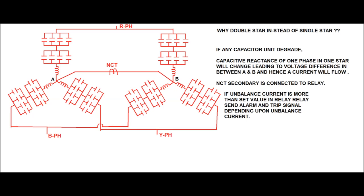Under healthy conditions, the star point voltage of each star connection is zero due to balanced current flowing in each star formation. If a capacitor unit in any phase degrades or fails, the capacitive reactance of that phase changes, causing unbalanced current flow in that star connection. This creates a voltage difference between the two neutral points A and B, causing a circulating current to flow, which the NCT senses.